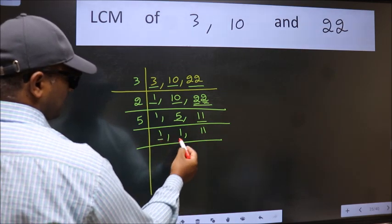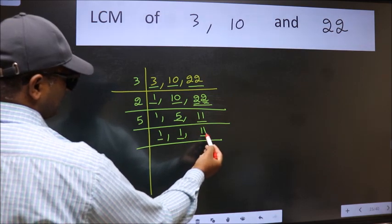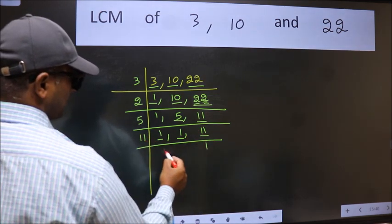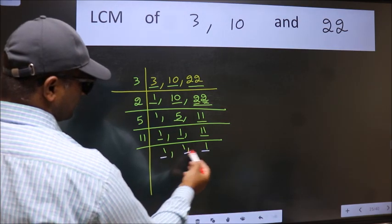Now we got 1 here and here, so focus on the next number, 11. 11 is a prime number, so 11 goes into 11 once. So we got 1 in all three places.